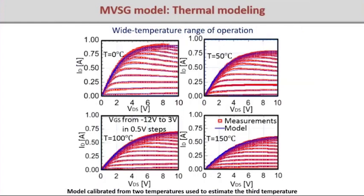For thermal heating, we measure IV data at different substrate temperatures by heating the chuck and taking pulsed IV data. From pulsed IV measurements, where self-heating is significantly removed, you can extract temperature coefficients by looking at curves at different chuck temperatures with RTH set to zero. Then you use steady-state data to extract RTH. A couple of chuck temperature measurements are used for extraction and a third temperature validates the accuracy.